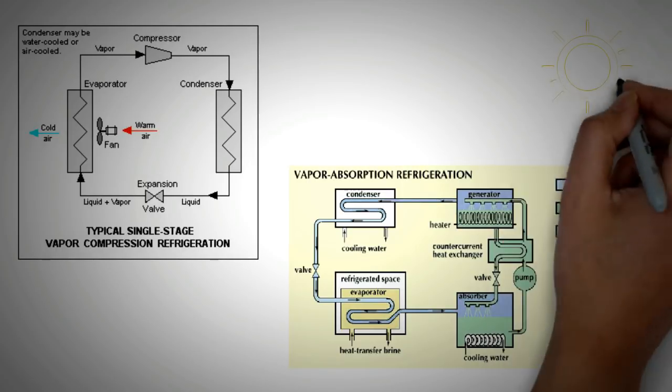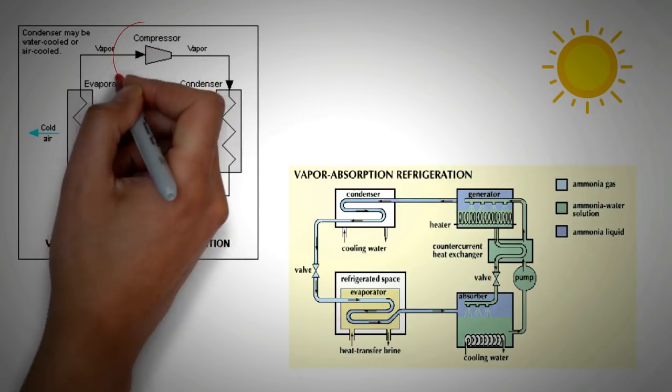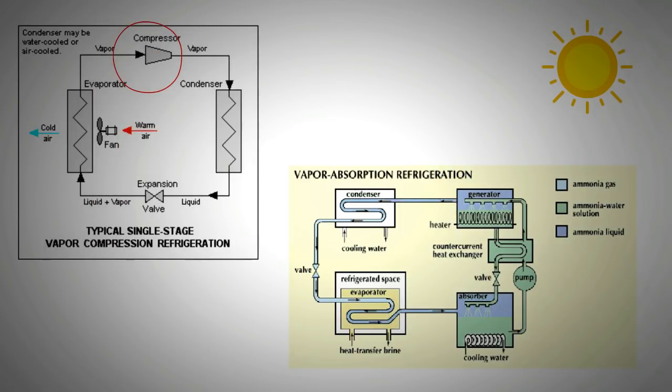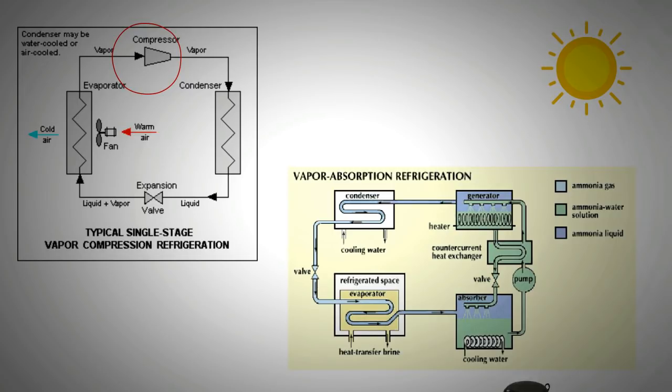Take the example of vapor compression cycle. In this one, the refrigerant is passed through a compressor. The compressor increases both the temperature and the pressure of the refrigerant. If the refrigerant is already preheated, then the workload of a compressor is reduced.